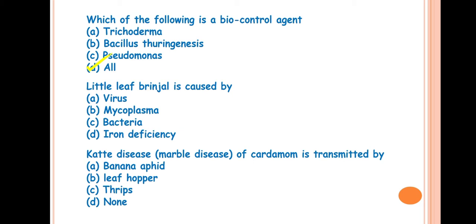The next question is, little leaf of brinjal is caused by? The answer is B, mycoplasma. The main symptom of this disease is shortening of petiole and production of small size leaves. This is caused by phytoplasma. Previously it was called mycoplasma, but now it's called phytoplasma. This is transmitted by insect vector, that is Hishimonus phycitis, that is a leafhopper. Please remember this, leafhopper, Hishimonus phycitis.